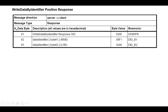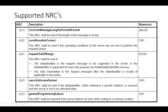The NRCs supported in the 2E service are: 13 — incorrect message length or invalid format; 22 — conditions not correct; 31 — request out of range; 33 — security access denied; and 72 — general programming failure. NRC 72 will be returned to the client if the server detects an error when writing the specified data into the memory location.